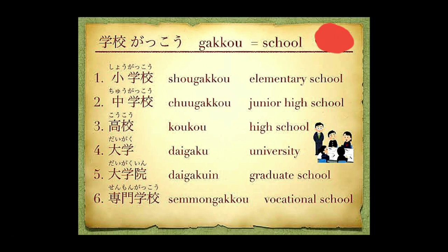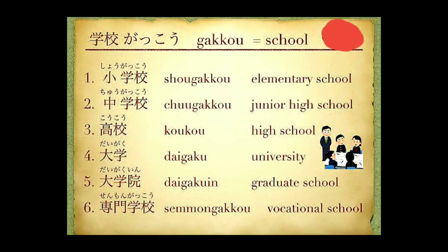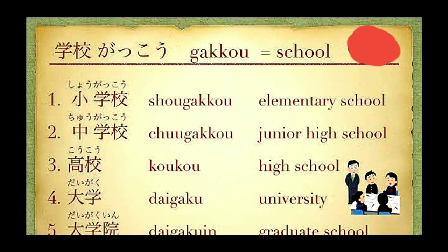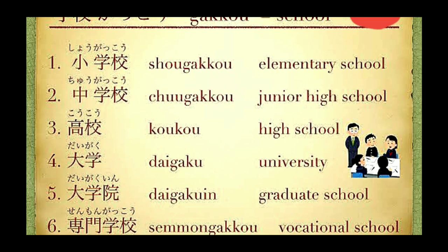Let us see some vocabularies related to school as well as the different types of schools. The first is Gakko — Gakko means school. Here is the kanji for Gakko; you can see the children, girls and boys. Shogakko means elementary school — the school for very small children. Here we can see the kanji for small as the first kanji, and then Gakko. Shogakko means elementary school.